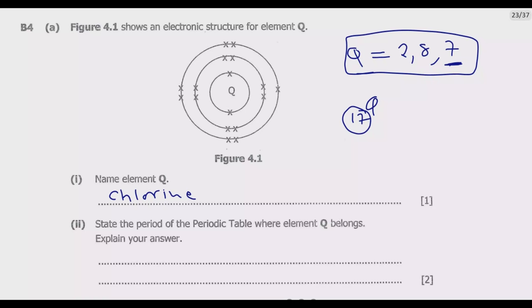Question 2: State the period of the periodic table where element Q belongs. Explain your answer. We notice that this one has 3 shells. Because it has 3 shells, it should belong to period 3. Then we need to provide explanation.